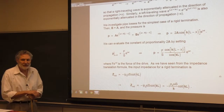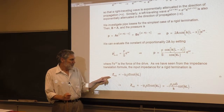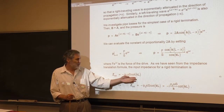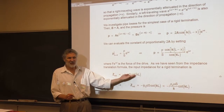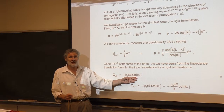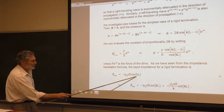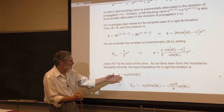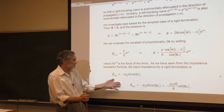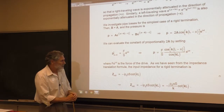Next is the input impedance. For a lossless pipe with a rigid termination, it's this — you can look back and see we got it from the impedance translation formula, a very useful formula. The resonances occur at vanishing reactance; there's no resistance in this model, so we get our usual resonances.